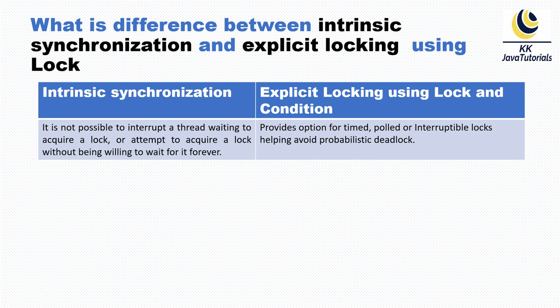The first difference: in intrinsic synchronization, it is not possible to interrupt a thread waiting to acquire a lock, or to attempt to acquire a lock without being willing to wait forever. Acquiring the lock depends on the JVM itself — you cannot interfere in your code. But in the case of explicit locking, you can provide options for timed or interruptible lock acquisition, helping to avoid problematic deadlocks. Java provides the Lock interface with the ReentrantLock implementation.